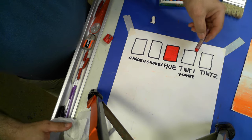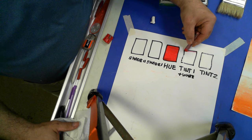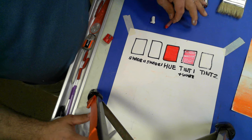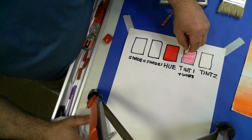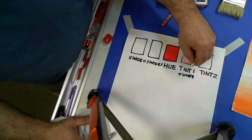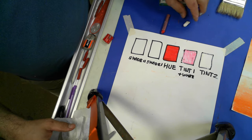Now this one here is tint one. So I'm going to take and lightly put my red over the top. Now I'm going to take my white, and I'm going to go over that. And that creates my first tint. Now if that wasn't dark enough, and I want it darker, I will come back to that.